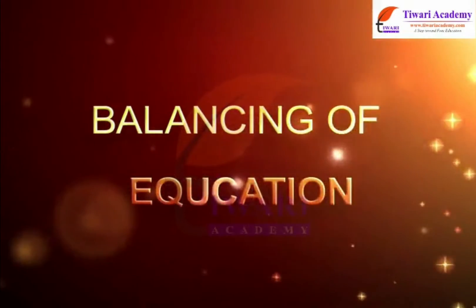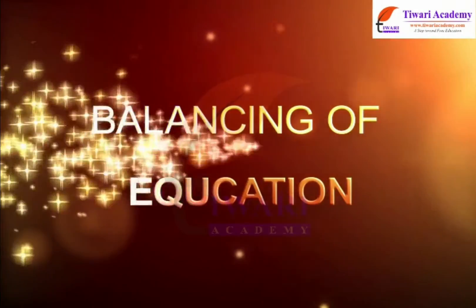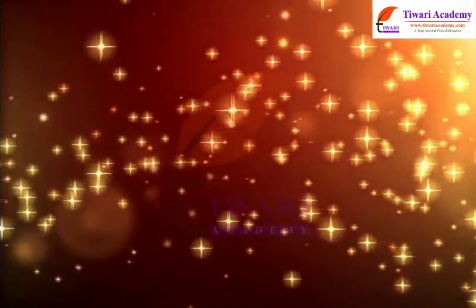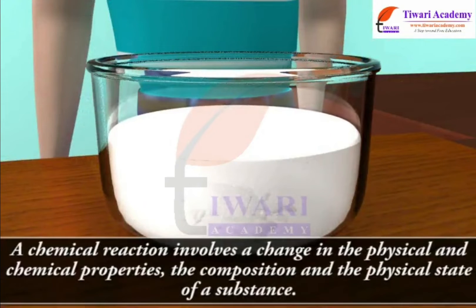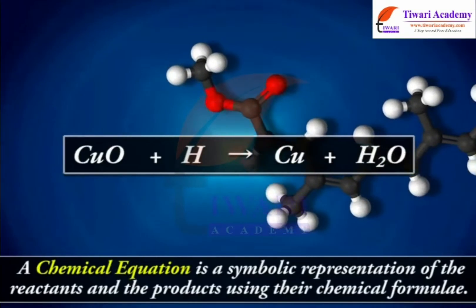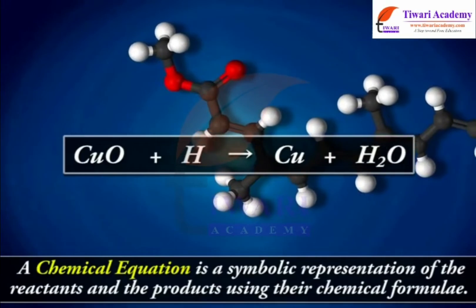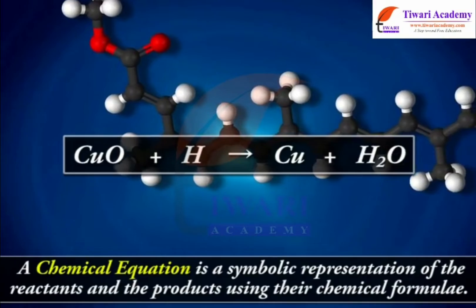Balancing of equations. A chemical reaction involves a change in the physical and chemical properties, the composition, and the physical state of a substance. A chemical equation is a symbolic representation of the reactants and the products using their chemical formulae.